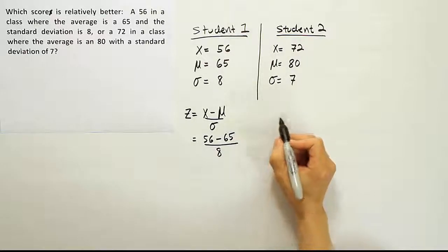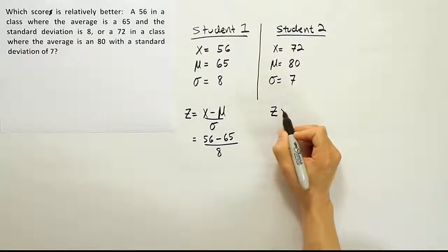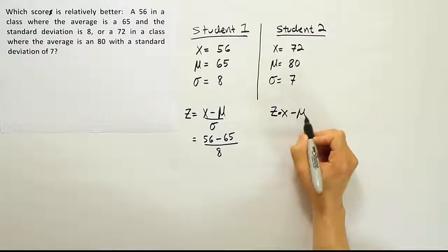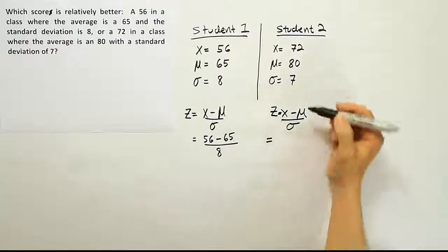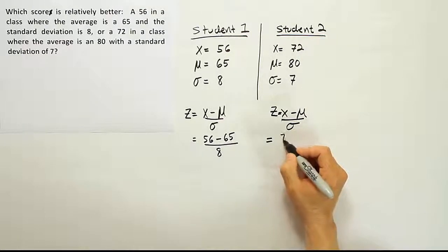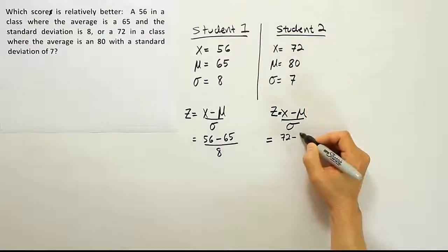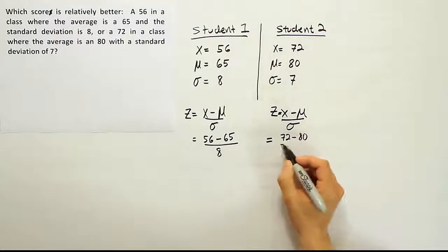And then for student 2, we have z equals x minus the mean, divided by the standard deviation. Filling in that formula for that student, it's 72 minus 80, divided by 7.